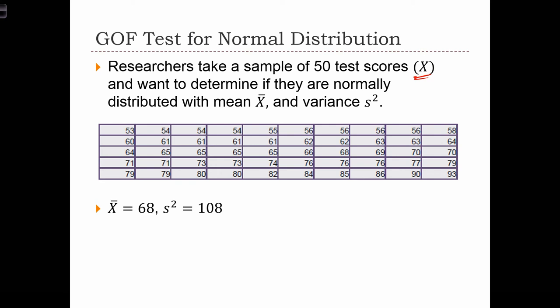The first thing that we're going to do is assume that they're normally distributed with the mean of x-bar and a variance of s-squared. In other words, we're going to assume that the x-variable is normally distributed with the mean of 68. That's just our x-bar from this data table, and the variance of 108.